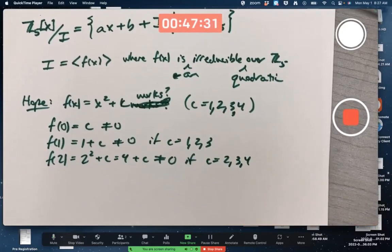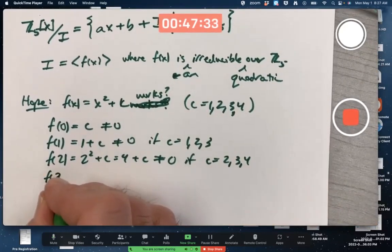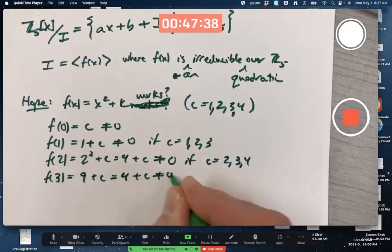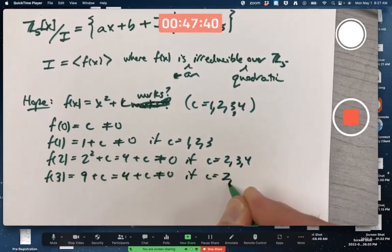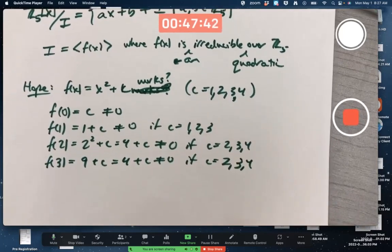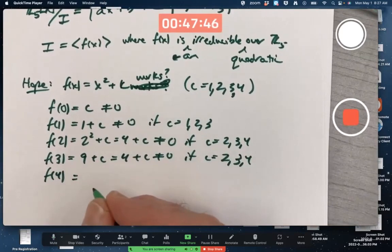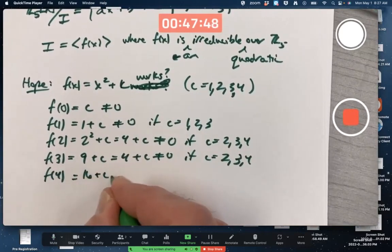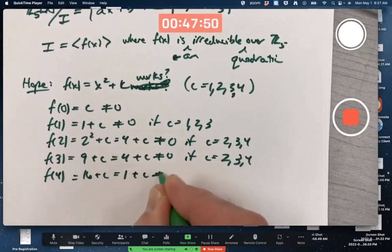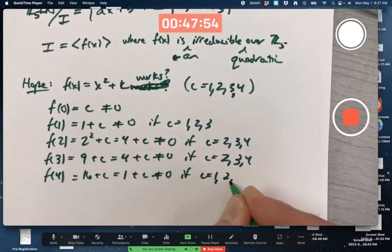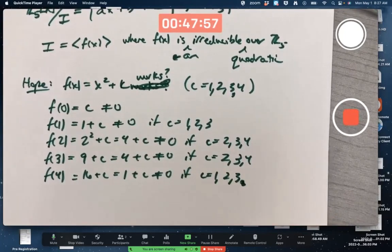f of 2 will be 2 squared plus c, 4 plus c, and that'll not equal 0 if c is 2, 3, or 4, not 1 mod 5. f of 3 is 9 plus c, mod 5 is 4 plus c. That'll not be 0 if c is 2, 3, or 4. Only one more to check. f of 4, 16 plus c, mod 5 is 1 plus c. That'll not be 0 if c is 1, 2, or 3. So, to make sure all these are not 0, looks like we should pick c to be 2 or 3. Pick one of them.